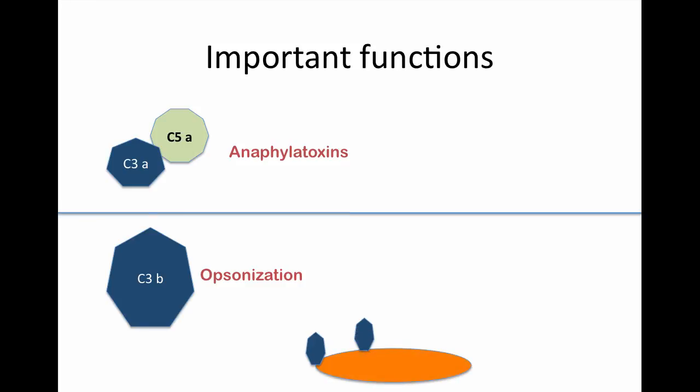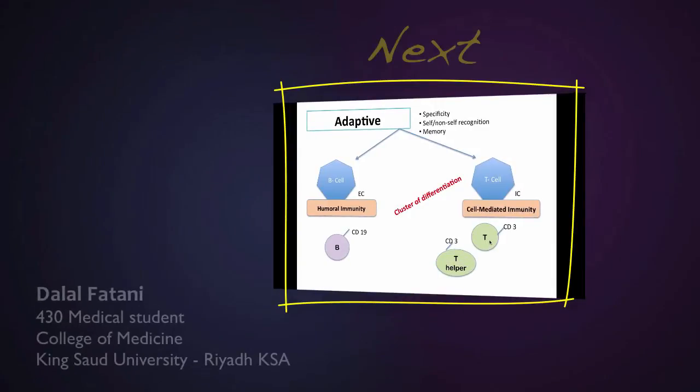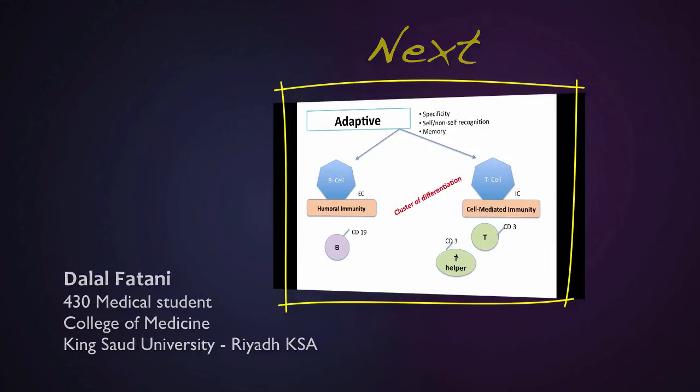C3b will attach to the surface of the bacteria so that when a white blood cell comes, it recognizes C3b. When this recognition happens, the white blood cell is going to phagocyte the bacteria. Watch our next video for more information about the adaptive immunity.